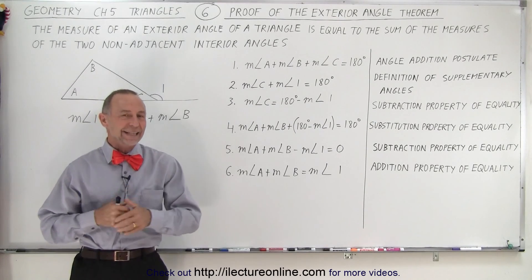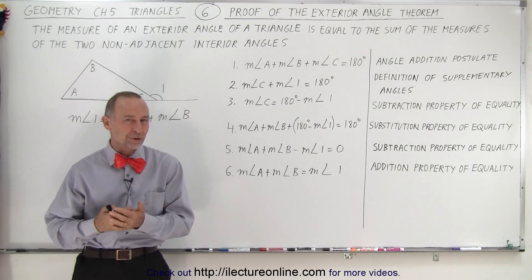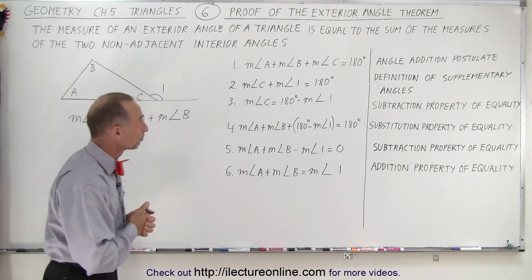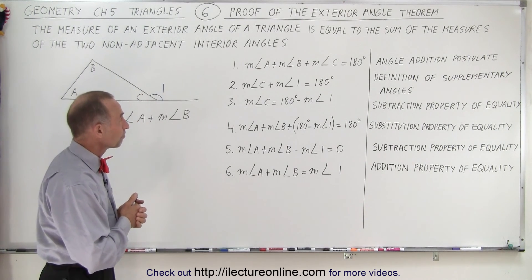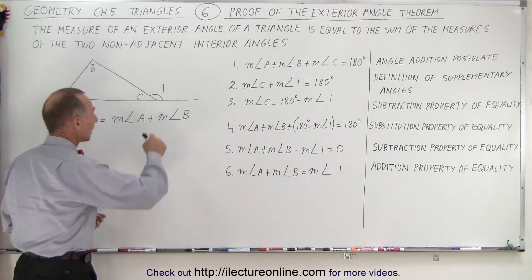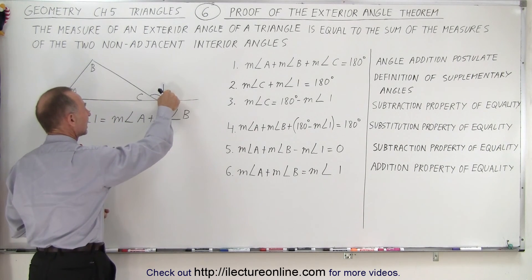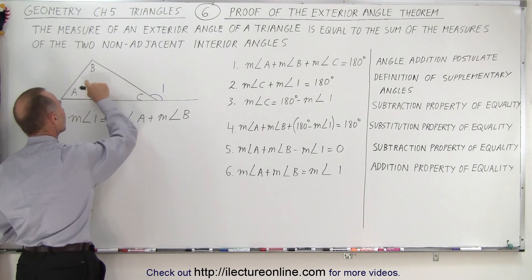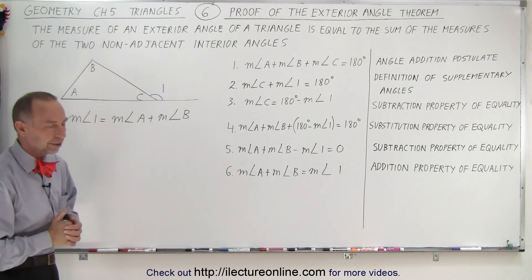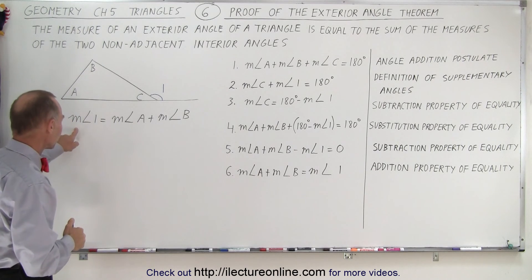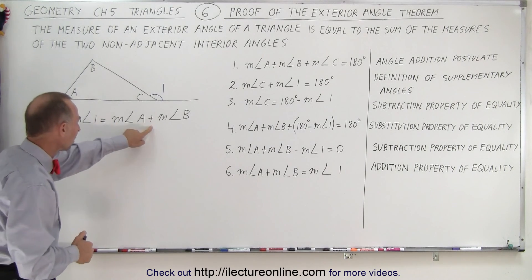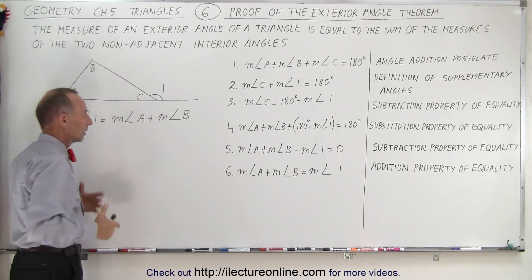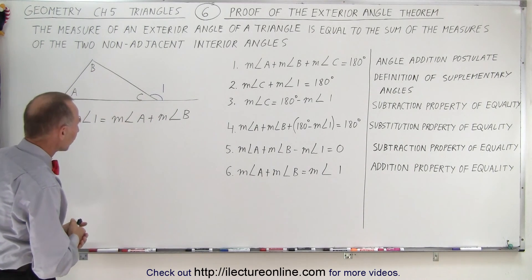Welcome to iLectureOnline. In this video we're going to prove the exterior angle theorem of a triangle. How do we prove that the exterior angle of a triangle is equal to the sum of the measures of the two non-adjacent interior angles of the triangle? Here we can say that the measure of angle 1 is equal to the sum of the measures of angles A and B, which are the non-adjacent angles of angle 1.